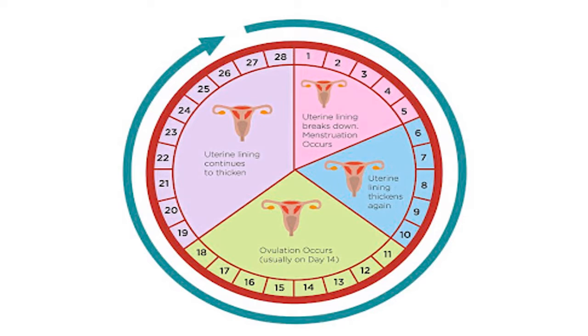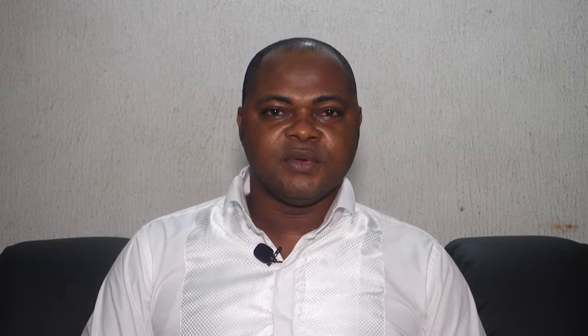Menstrual cycle usually begins at puberty from 12 to 15 years. Sometimes it may start earlier than 12 years or later than 15 years. This menstrual cycle occurs cyclically from the first day to the 28th day of the month, and it continues throughout the reproductive life of the woman until she enters menopause. Since menstrual cycle occurs in the endometrium of the uterus, let's look at the changes that occur in the uterus.